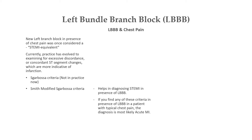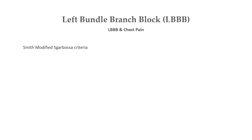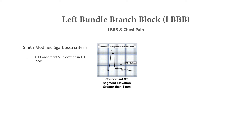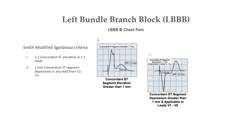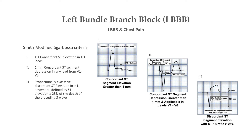If you find any of these criteria in the presence of left bundle branch block in a patient with typical chest pain, the diagnosis is most likely acute myocardial infarction. Criterion 1: 1 mm or more concordant ST elevation in one or more leads. Criterion 2: 1 mm concordant ST segment depression in any lead from V1 to V3. And criterion 3: proportionally excessive discordant ST elevation in one or more leads anywhere, defined by ST elevation greater than or equal to 25% of the depth of the preceding S wave.